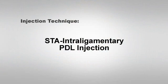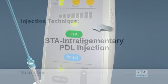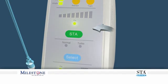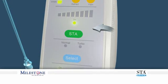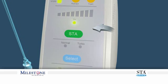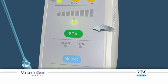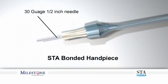Let's discuss how to begin. Injection technique: STA intraligamentary PDL injection. Verify that the STA system is set to the STA mode. This injection is performed using the wand 30-gauge, half-inch bonded STA wand handpiece.